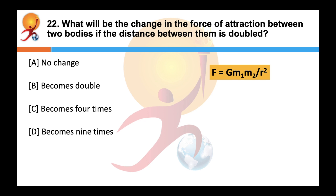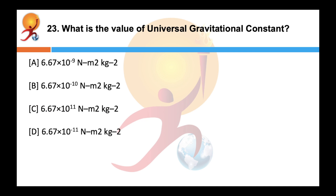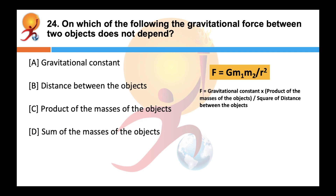What will be the change in the force of attraction between two bodies if the distance between them is doubled? Correct answer is C: it becomes one-fourth. If r becomes 2r, then the denominator becomes 4r², so the force is reduced to one-fourth. The value of universal gravitational constant G we have already seen in previous questions — answer is D. The gravitational force between two objects does not depend on the sum of the masses; it depends on the gravitational constant, distance, and the product of the masses, given by F = G·m1·m2 / r².